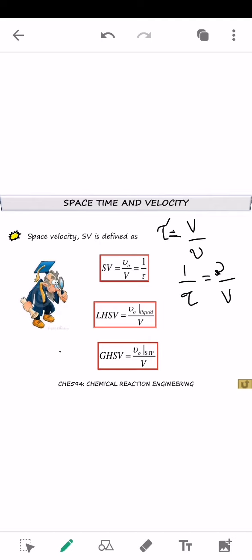So LHSV stands for liquid hourly space velocity and so it is defined as volumetric of liquid divided by volume of reactor. GHSV is defined as gas hourly space velocity so it is defined by volumetric of gas which is at standard of temperature and pressure condition and divide by volumetric of reactor.